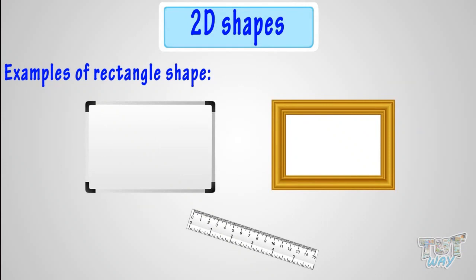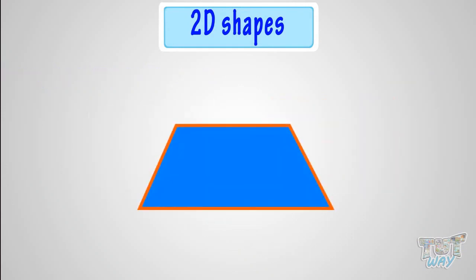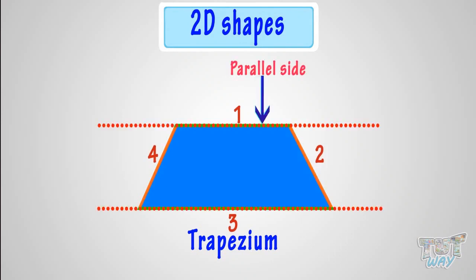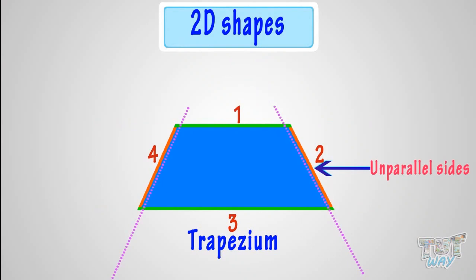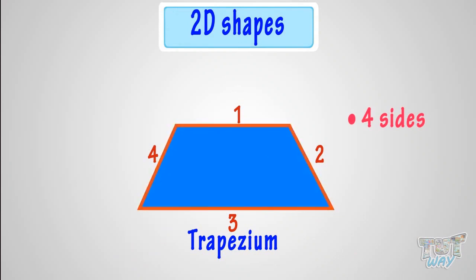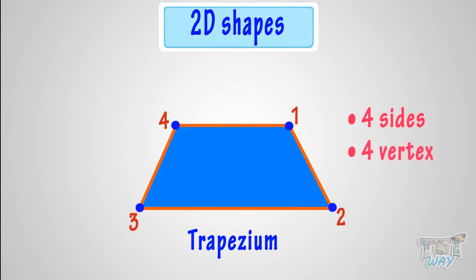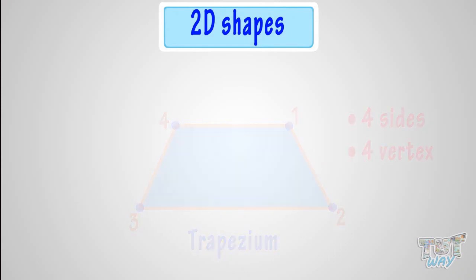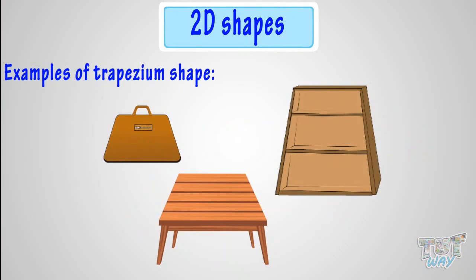Now let's learn another four-sided shape. This is called a trapezium. It is a four-sided shape where one pair of sides is parallel and the other pair is not parallel. These sides are parallel to each other, and these two sides are not parallel to each other, so this is a trapezium. It has four sides and four edges. These are various things that are trapezium in shape.